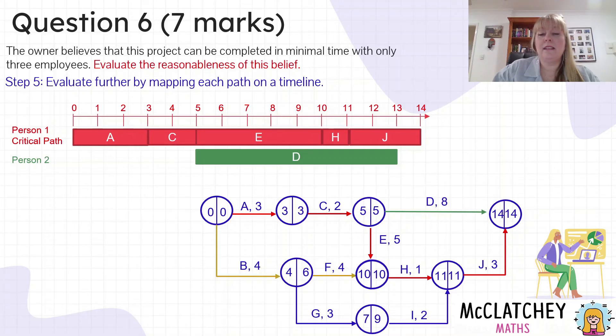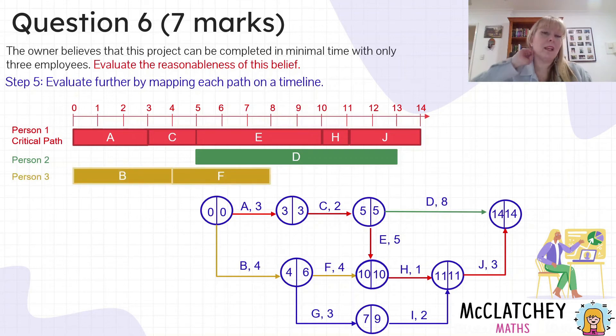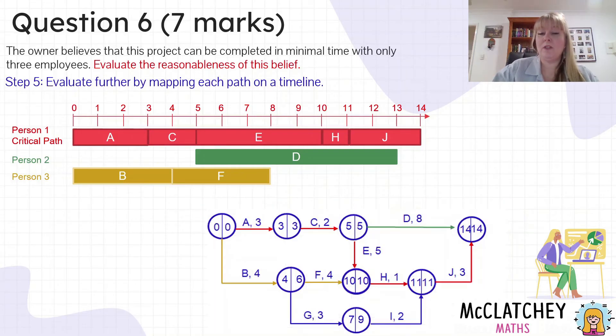Now we're going to look at this next pathway, which is activity B and F shown in orange. And we can see the activity B and F, and we put that on the timeline. It actually overlaps with what person one's doing on the critical path and what person two is doing. So we know we've got three people working there all at the same time. Now we need to work out what's happening on our final pathway G and I, because G and I might actually be something that's happening separate to those activities.